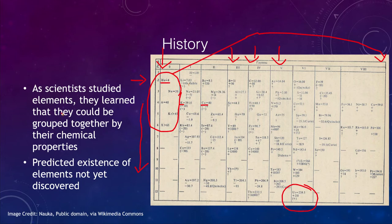What it did predict was the existence of elements that had not yet been discovered because they had not been detected, but there were elements that should fit in various places but had not yet been detected.